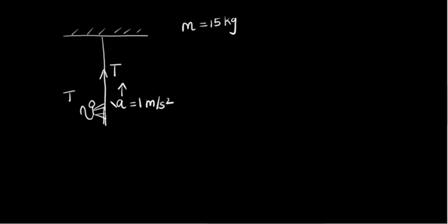There is a monkey going upwards with a certain acceleration of 1 meter per second square. The question is, how much force does the monkey exert on the rope? Let's say the monkey exerts tension T.